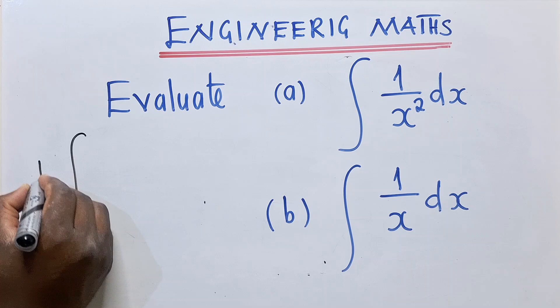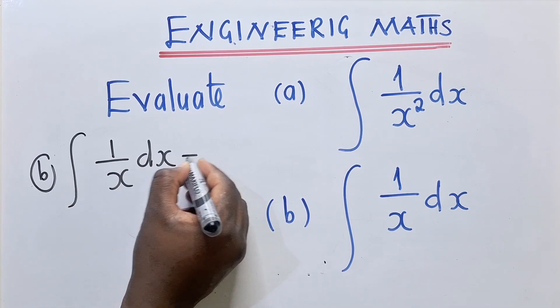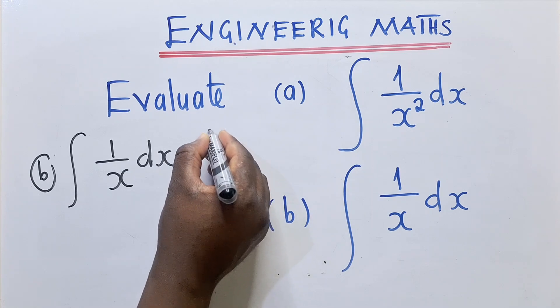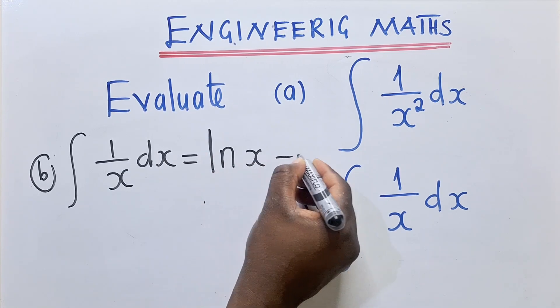So the integral, that's B, the integral of 1 over x with respect to x will be equal to, or should I say ln? This is ln of x plus C.